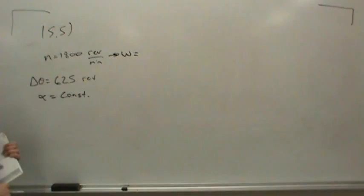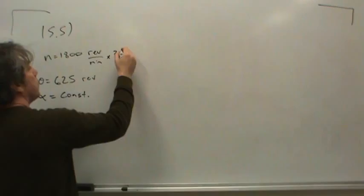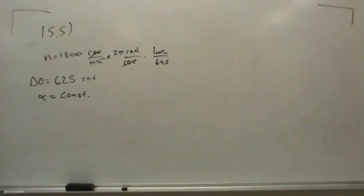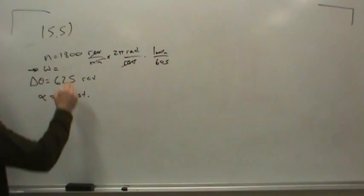If you guys would give me some calculator help, let's just multiply it out. There are 2π radians per revolution, and there is one minute per 60 seconds. So the minutes go away and the revolutions go away. We'll have radians per second. How many radians per second is this?